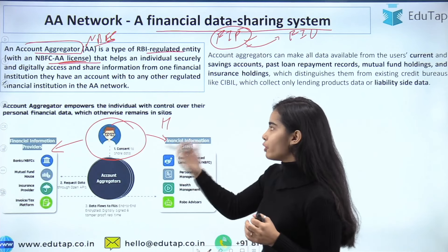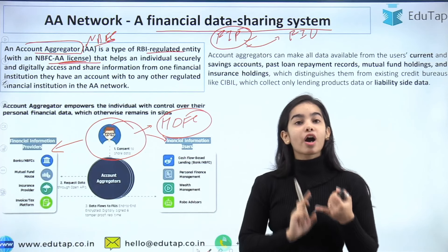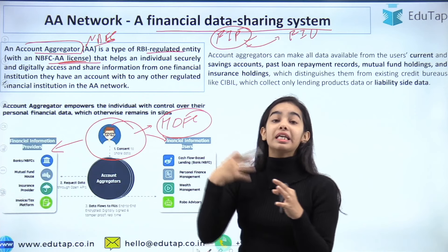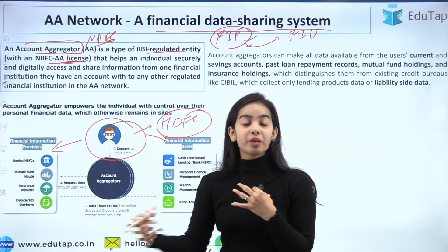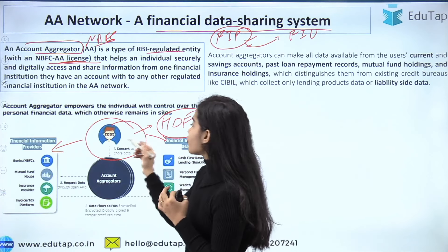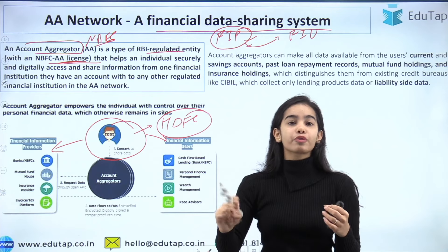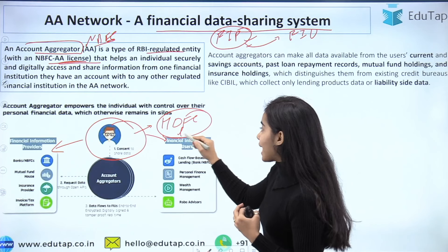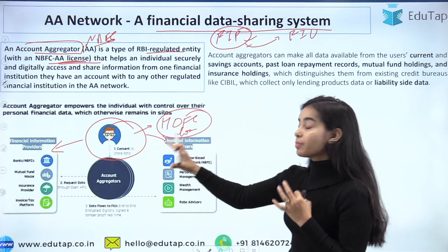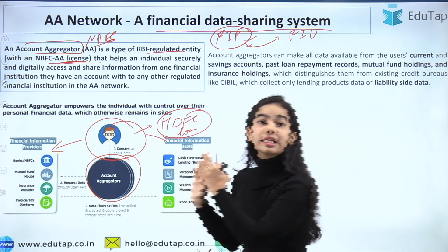For example, suppose a person wants to get a home loan from a bank. That person has to provide all information to the bank — how much savings they have, how much money is in their current account, how much is invested in mutual funds, what insurance holdings they have. All this information had to be provided manually, and the bank had to check each piece — a cumbersome, time-consuming process. To make this easier, the Account Aggregator comes in between as a consent manager.